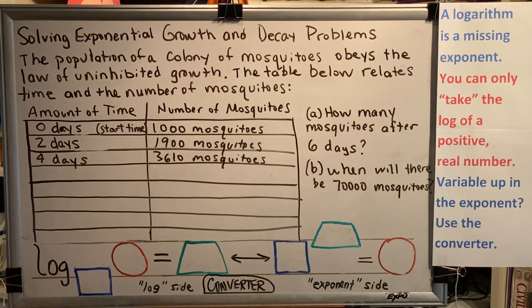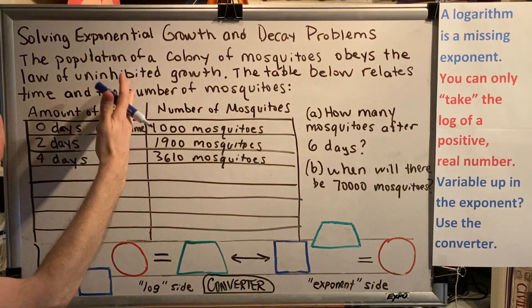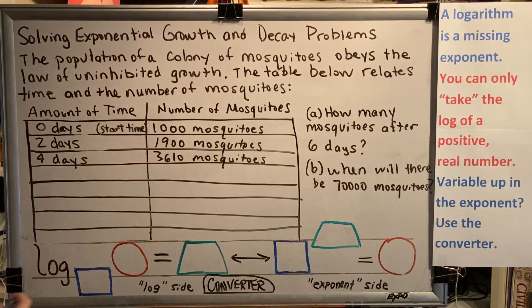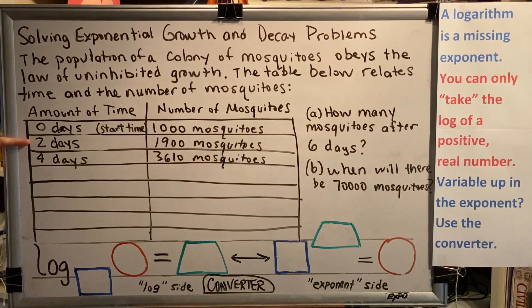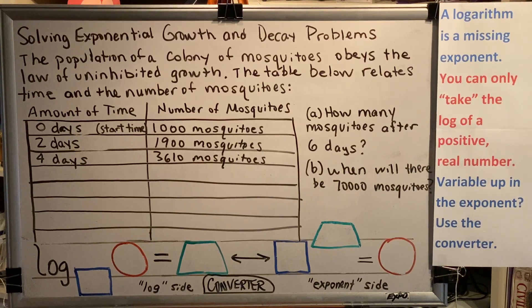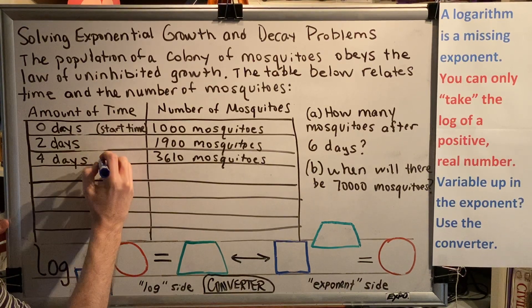Remember that exponential growth and decay means that adding time results in multiplying or dividing of amount. You have to add in the first column and multiply or divide in the second column. If you ever find yourself adding over here, you are making a mistake. Stop what you are doing.